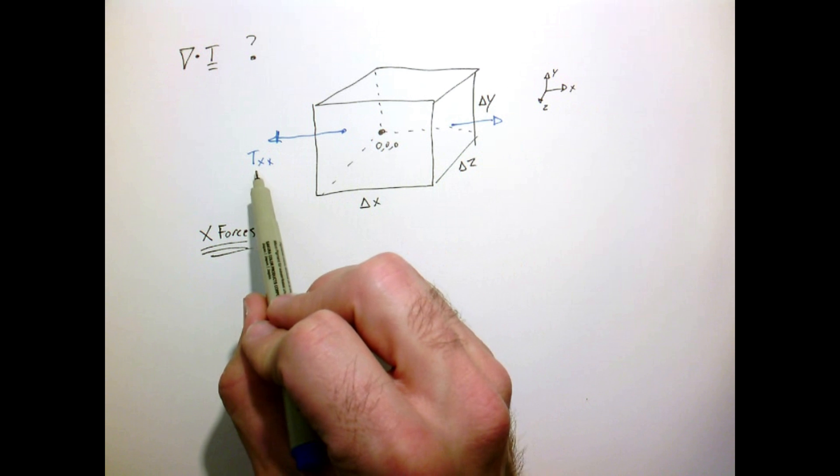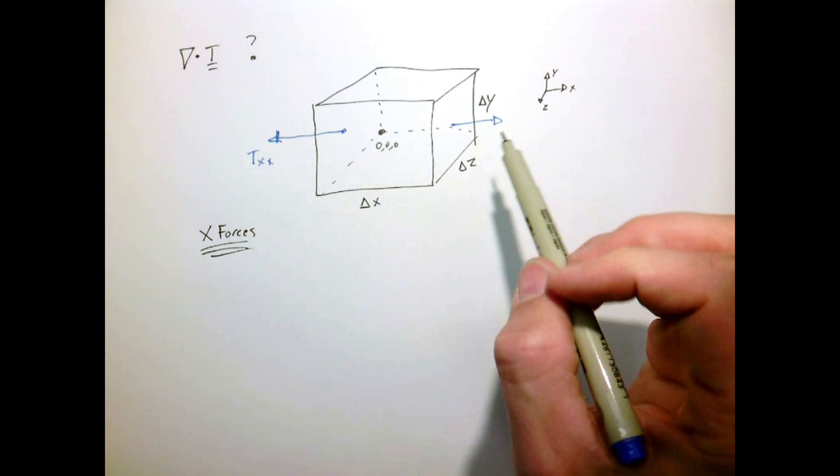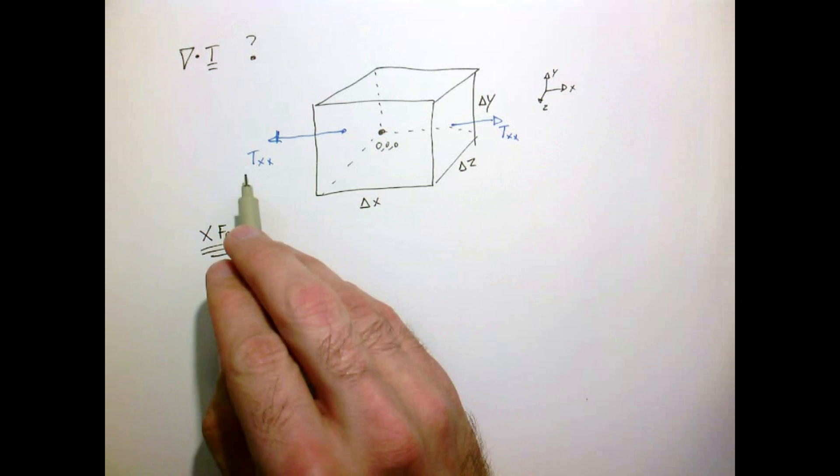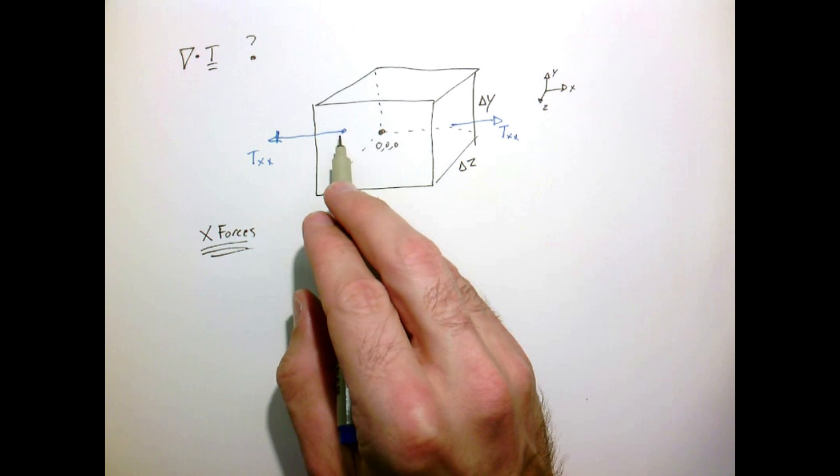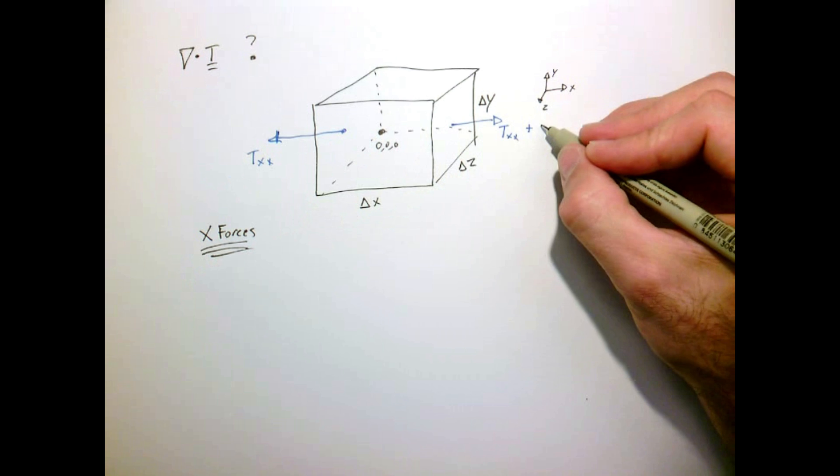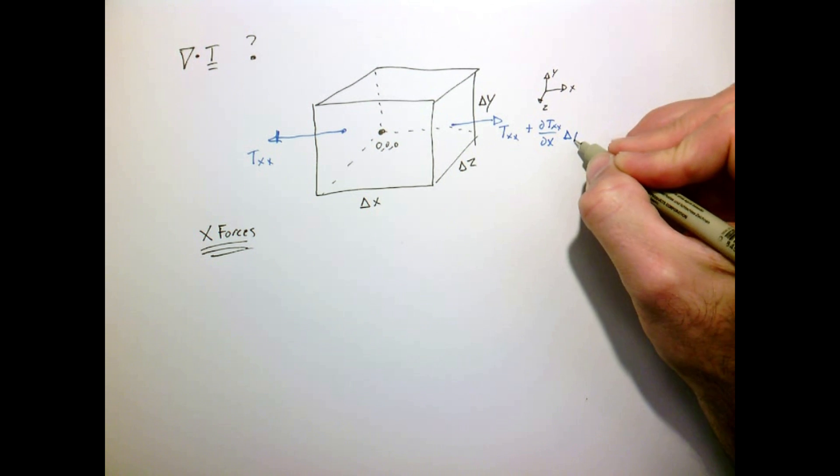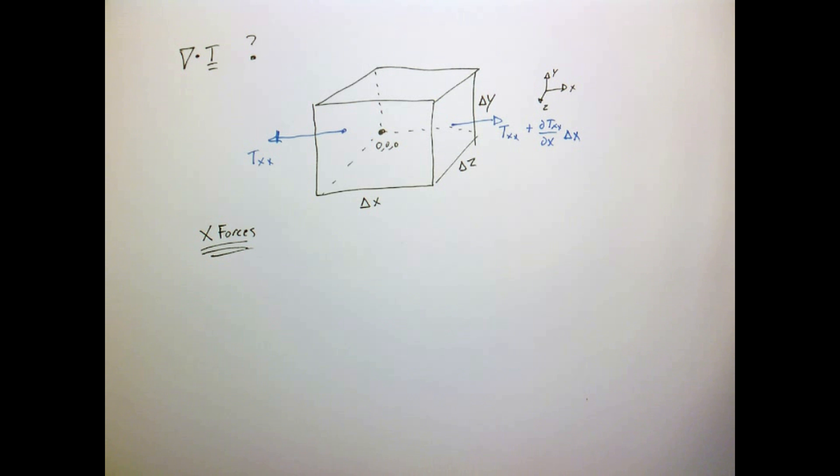And if our stress tensor is varying in space, but over a small distance, we can approximate the stress here as τ_xx, the value that it was at zero, zero, zero, plus a little bit, based on its derivative with respect to x, times the length delta x. So that's just the Taylor series.